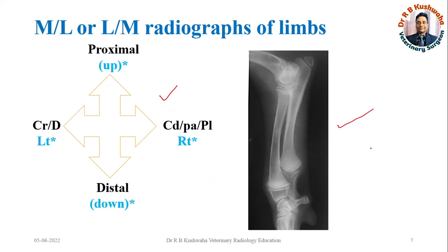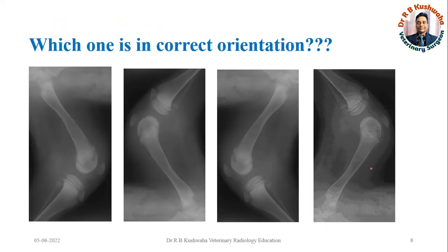How do you know which aspect is caudal? Just by normal radiographic anatomy. That is why a radiologist must have knowledge of normal radiographic anatomy. The accessory carpal bone, the ulna, and the anconeal process can all be identified by radiographic anatomy to determine correct orientation.